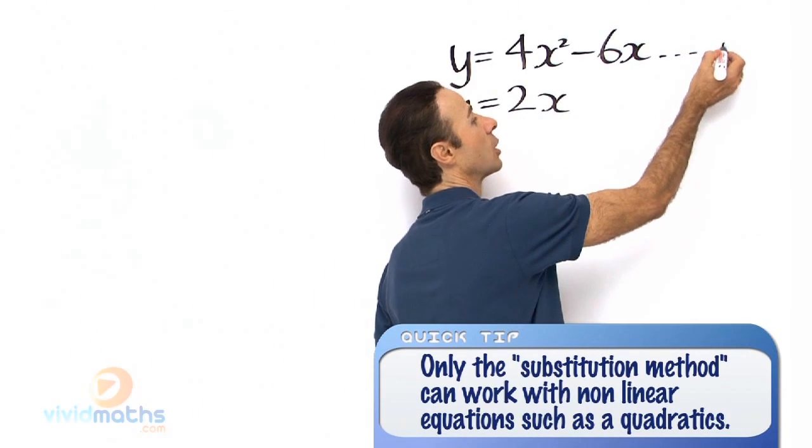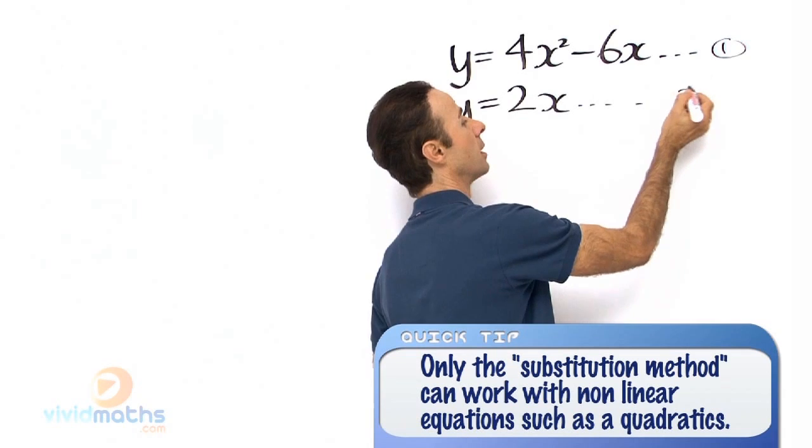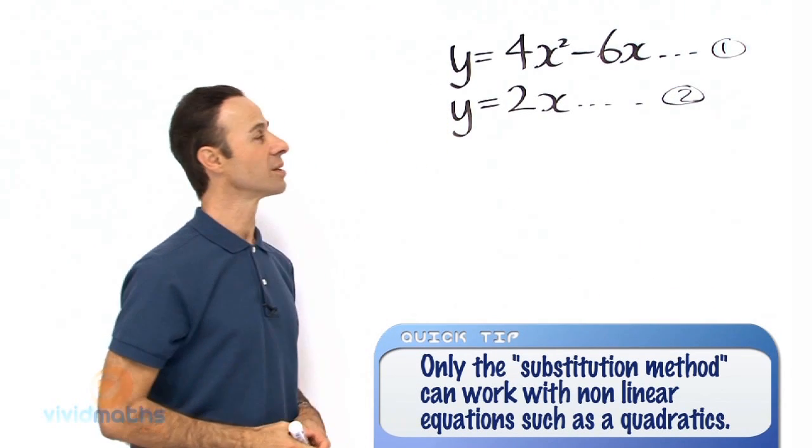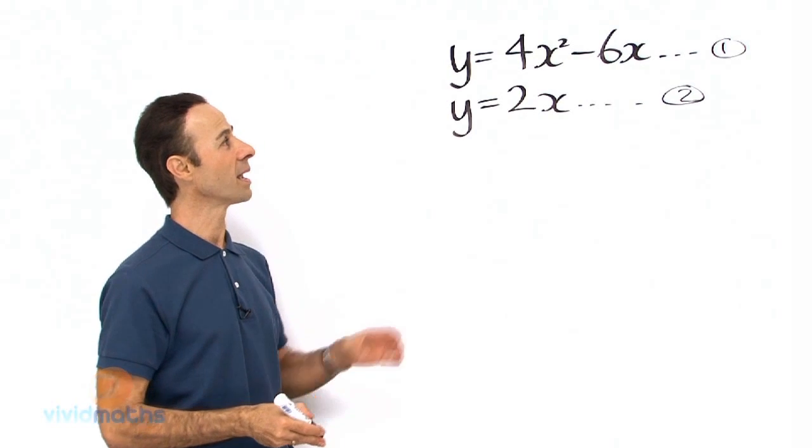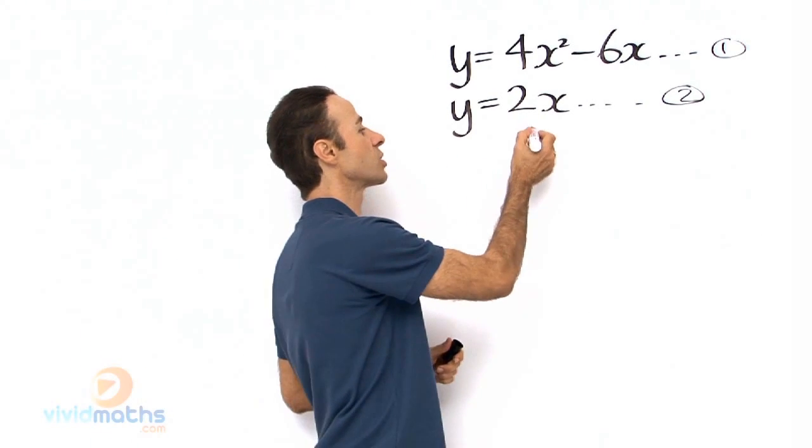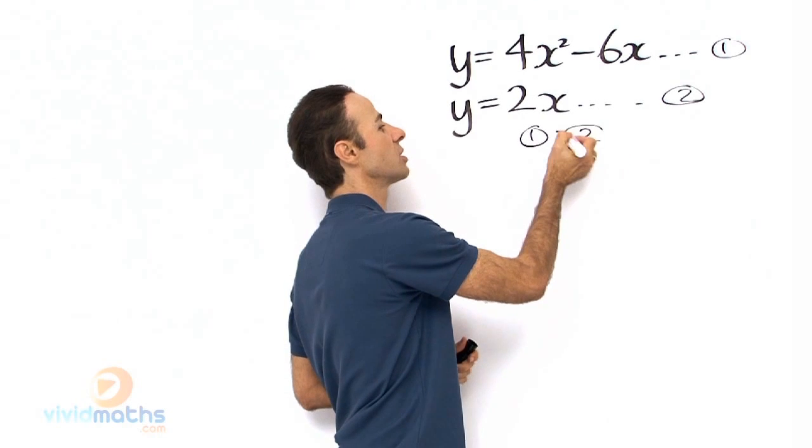So let us call the top one equation 1 and the bottom one equation number 2. So substitution means let us make the top one equal the bottom one, so equation 1 equals equation 2.